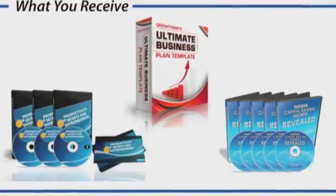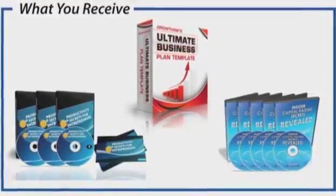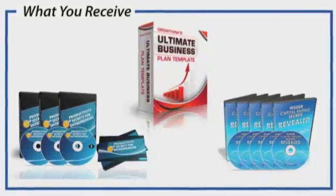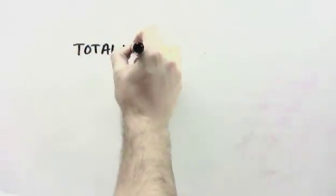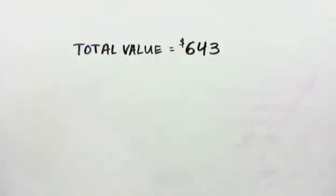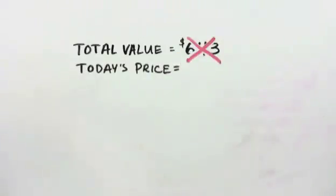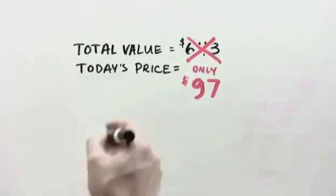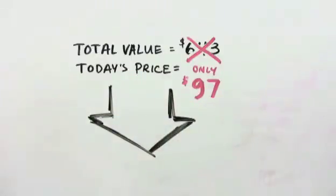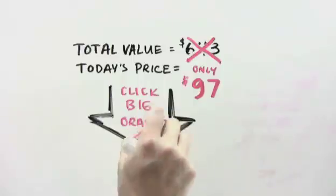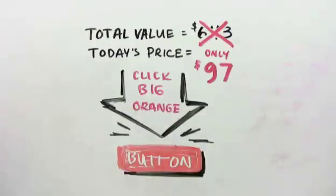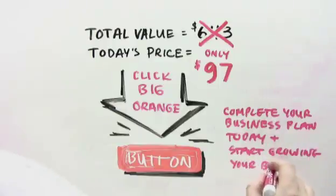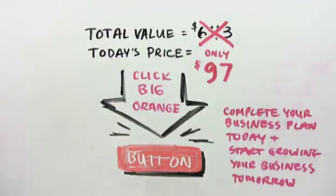So if you order right now, you're going to get GrowThink's Ultimate Business Plan Template, our Productivity Secrets for Entrepreneurs course, and our Insider Capital Raising Secrets audios. So this is a total value of $643. At today's price, you can get this for only $97. So simply click the big orange button below right now and get started once again for only $97. And then you can develop your business plan and the company of your dreams today. Now, why wait to get started when you can literally complete your business plan today and start growing your company tomorrow? So hit the big orange button below and get started now.